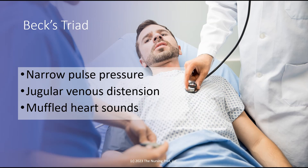A narrow pulse pressure is seen with both hypovolemic and cardiogenic shock, so that could occur with either one. This could be hypovolemic in nature, especially if the patient was having a traumatic event. However, jugular venous distension doesn't follow with hypovolemic shock — in hypovolemic shock, we would have flat jugular veins. So the narrow pulse pressure plus jugular venous distension leads us to think this is cardiogenic in nature. But why isn't this just cardiogenic shock? Well, then we hear the muffled heart sounds, and that's the key telling us this is a cardiac tamponade.